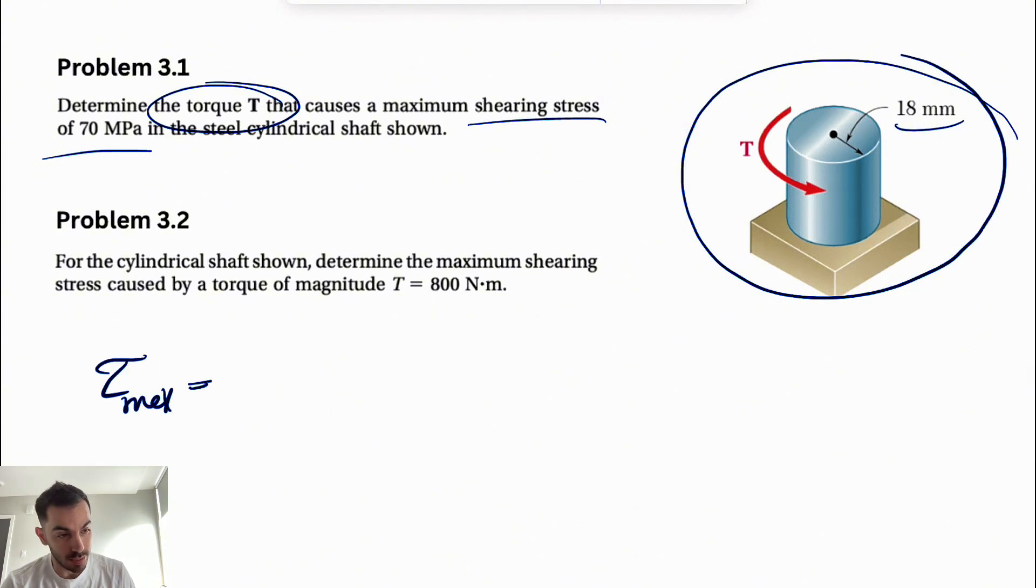The maximum shearing stress equals the torque times the radius, which we can show with ρ or c, divided by J, the moment of inertia. For a circle, we know the moment of inertia from statics: J = π/2 × ρ⁴.